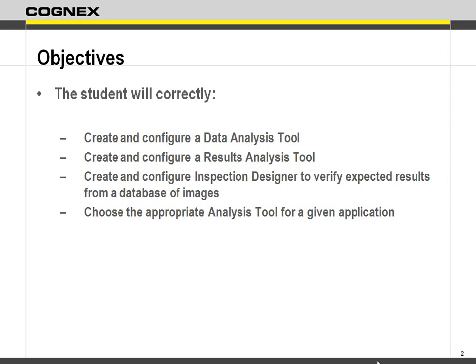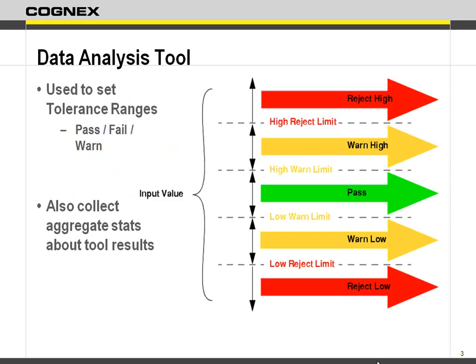We're going to configure a data analysis tool as well as a results analysis tool. I'm going to hold off on the results analysis tool until we do the inspection designer, which is in this section as well. I'll do the data analysis tool first, then go into inspection designer — partly because it's broken in version 7.2, and also because it's a more advanced topic. The data analysis tool is really just limit checking.